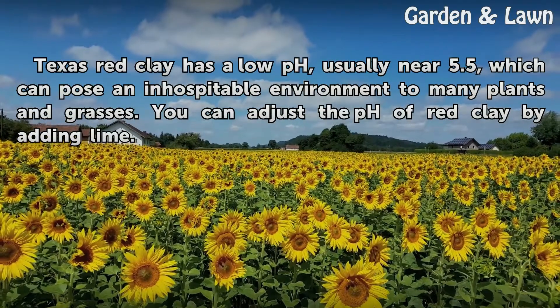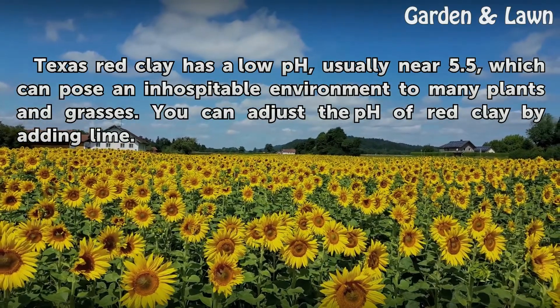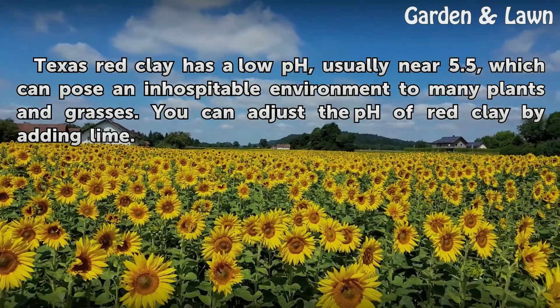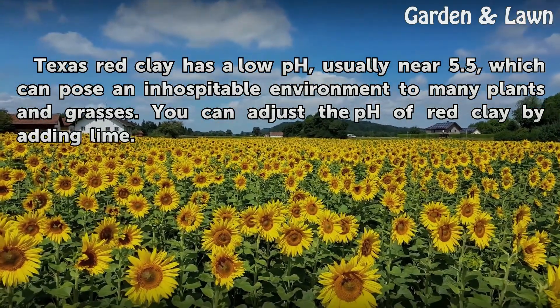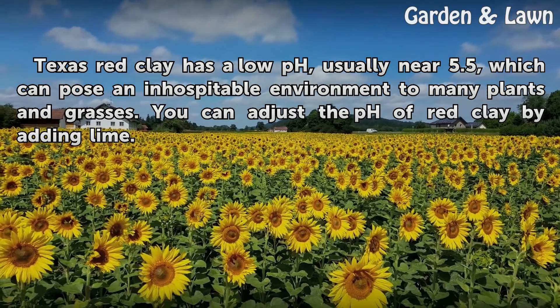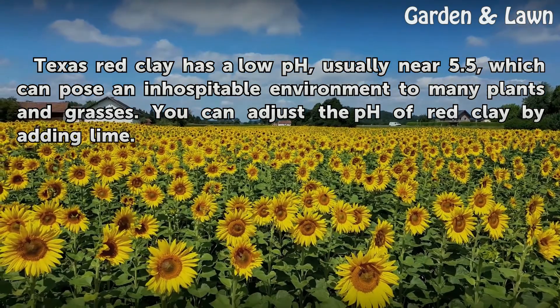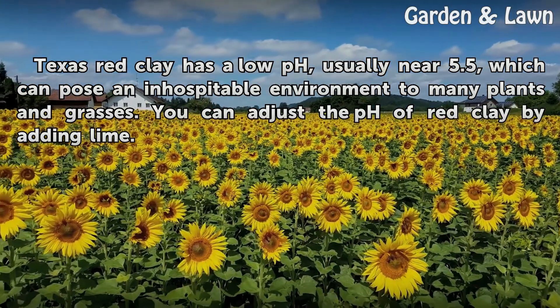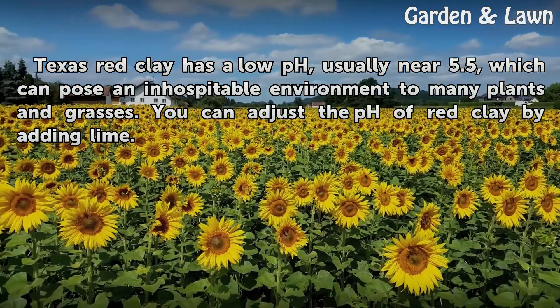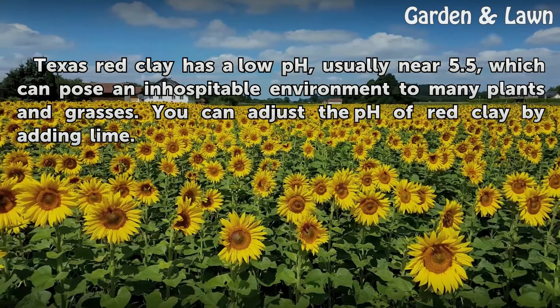Texas red clay has a low pH, usually near 5.5, which can pose an inhospitable environment to many plants and grasses. You can adjust the pH of red clay by adding lime.